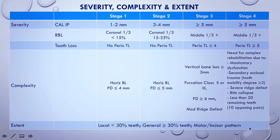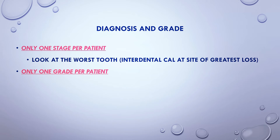If disease is only involving molars and incisors, you would call it a molar-incisor pattern. The reason this was included is because in the new system there's no longer a diagnosis of juvenile or aggressive periodontitis, so the molar-incisor pattern preserves that distinction. There is only one stage per patient and only one grade per patient — you look at the worst tooth. For example, if only one tooth is Stage 3 and the rest are Stage 1 or 2, you still call it localized Stage 3.